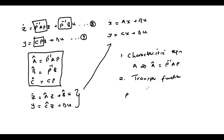Number two, the transfer function of the system remains invariant. In my next video, I will be discussing the methods of determination of a suitable transformation matrix P that is able to transform from one state variable to another without changing the characteristic equation and the transfer function of the system, which are the features that uniquely define a given system. Otherwise, thank you for watching this video.